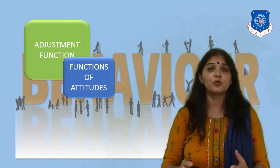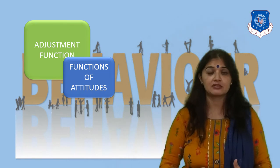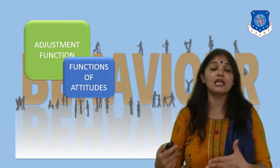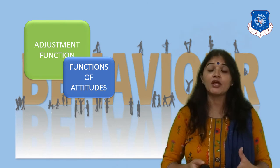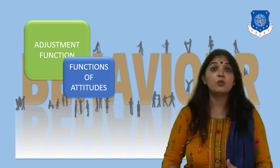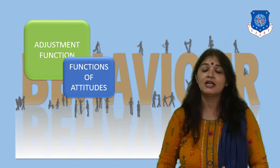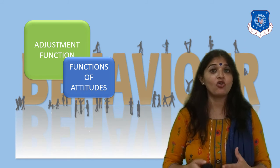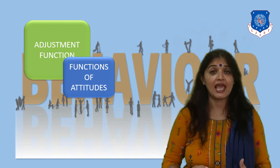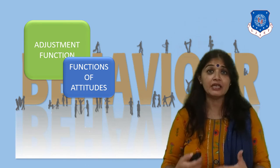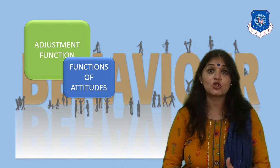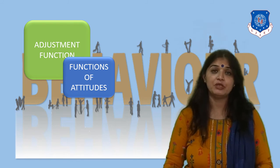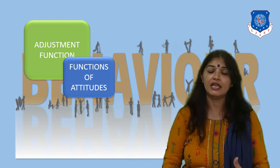The first function of attitude is the adjustment function, which allows a person to adjust to the environment. The attitude is formed in response to the attitude of others or in response to the environment. For example, an employee will work enthusiastically, be joyful and cheerful if his or her boss is very motivated. On the other side, if the boss is negative, subordinates will work with a negative attitude and be demotivated or very lethargic. Attitude helps people in adjusting or fitting into the environment according to its requirements.